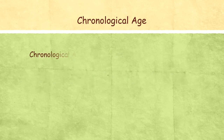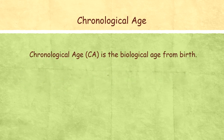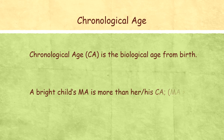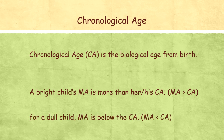Chronological age is basically biological age from birth. Mental age refers to how the mind is performing. A bright child who performs well in class has an MA greater than his CA. For the dull child, MA is below the CA.